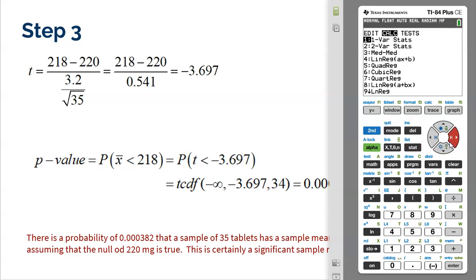So first we're going to hit stat, then we're going to slide over to tests, and then we're going to select a t-test. Once again, don't do a z-test unless you know the population standard deviation, which we don't.